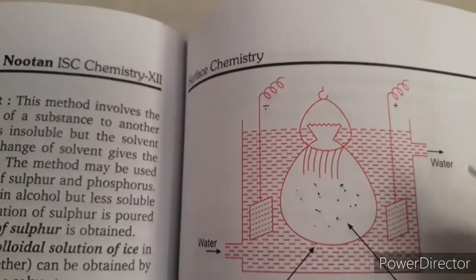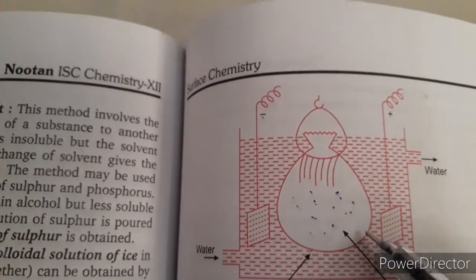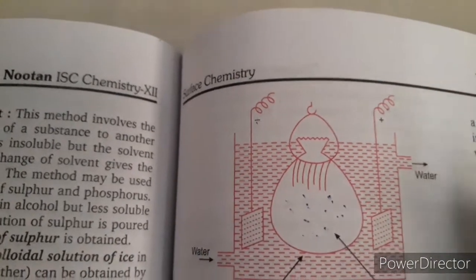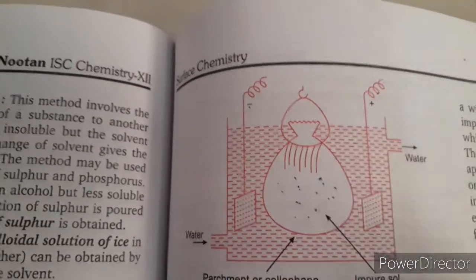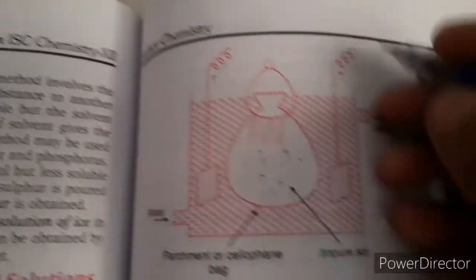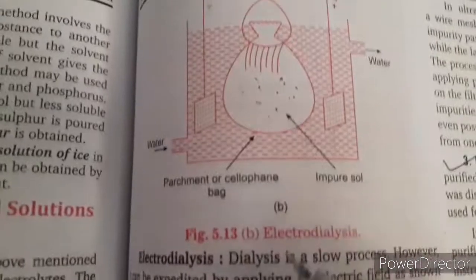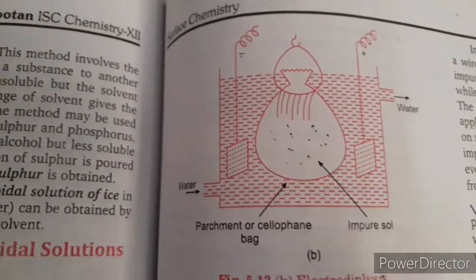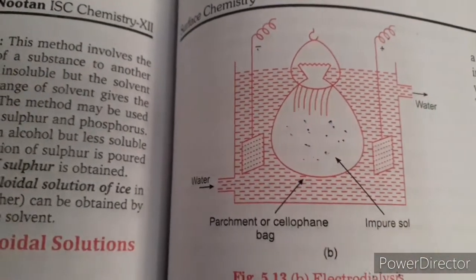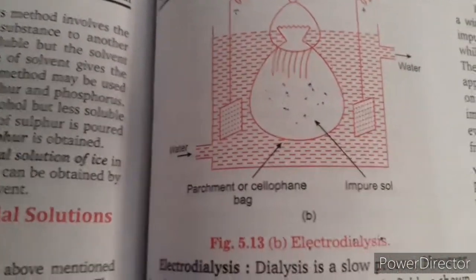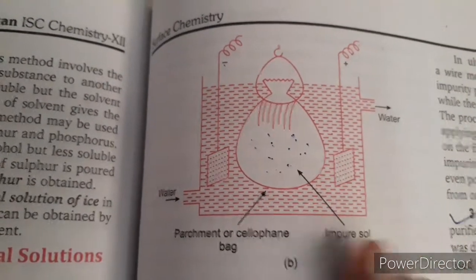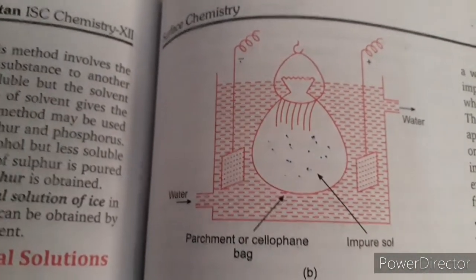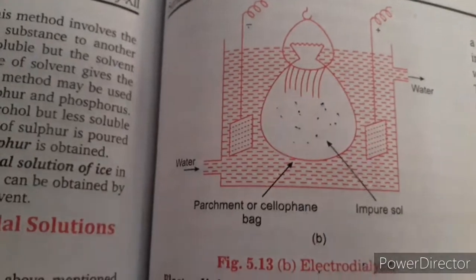This improved process has a new name. Because we have used electrodes and an electric field, this process is called electrodialysis. It is quicker and faster than ordinary dialysis, and it is a very important concept.